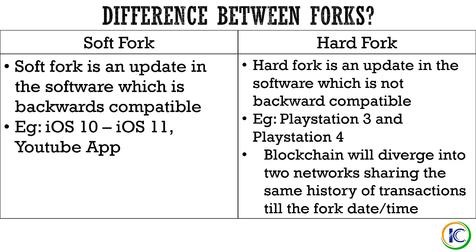In a soft fork, it is basically an update to the software which is backward compatible. Here is an example: iOS 10 and iOS 11. If you have an iPhone 5s, your phone is compatible with both iOS 10 and iOS 11. That means if your phone has some issues with iOS 11, you can roll back to iOS 10 and your iPhone will still work. The only difference is you won't get the features available in iOS 11.